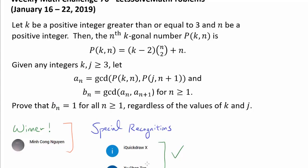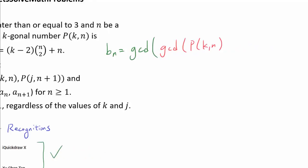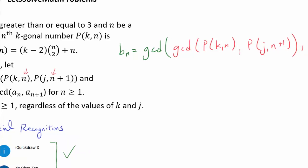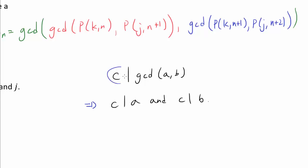We wish to show that b_n is equal to 1 for every n. We can see that b_n is the greatest common divisor of a_n and a_{n+1}, and we know a_n is the greatest common divisor of p(k, n) and p(j, n+1). Before we proceed, let me bring your attention to a very elementary theorem: if c divides the GCD of a and b, then c divides a and c divides b. So if an integer divides the greatest common divisor, it is a common divisor of a and b. We will use this in a few seconds.